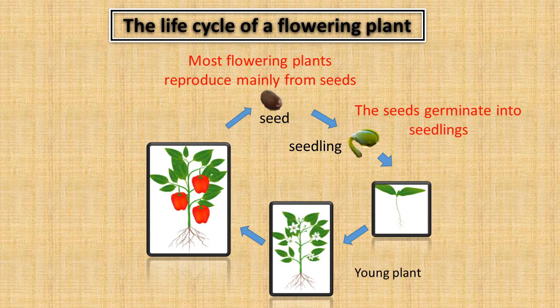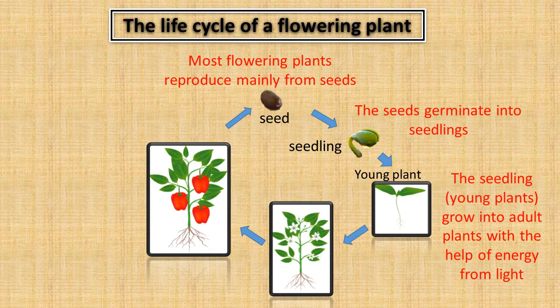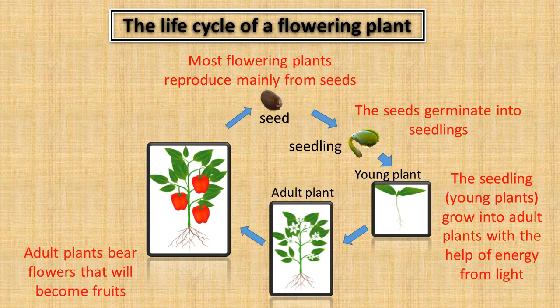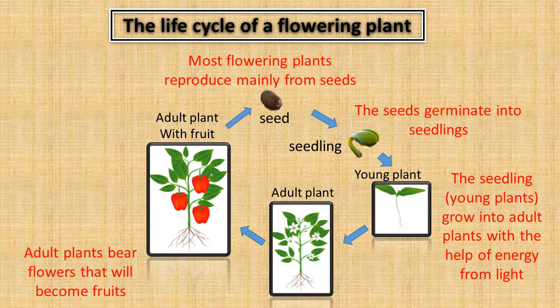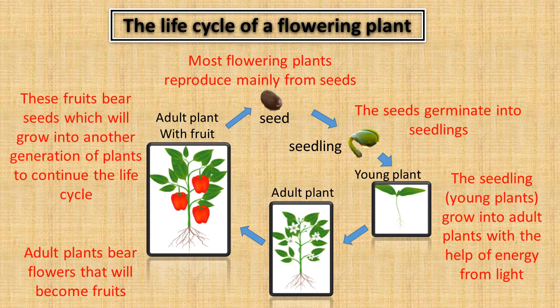The seedling or young plant grows into an adult plant with the help of energy from light. Adult plants bear flowers that will become fruits. These fruits bear seeds which will grow into another generation of plants to continue the life cycle.